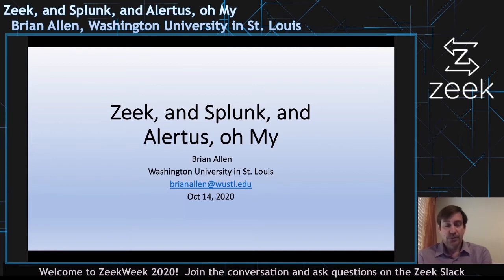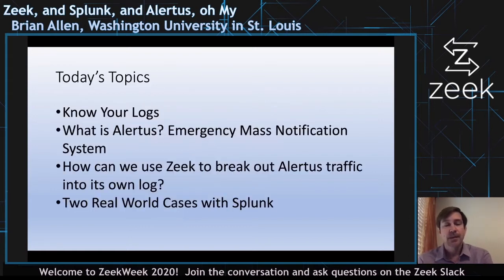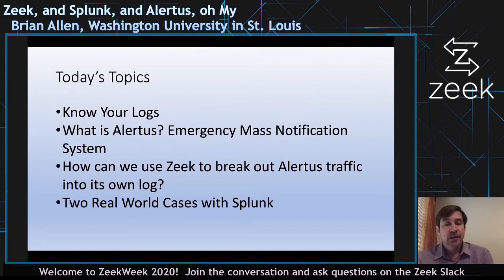Nowadays at Washington University we've got a cluster with one manager and five workers, a hundred cores. Just in 2019 we added a bunch of taps and some load balancers, and now we monitor not just north-south but also east-west traffic. And that's how I learned about these Alertus logs, because I could see all the traffic on campus I couldn't see before. I highly recommend getting some east-west traffic in there if you can.